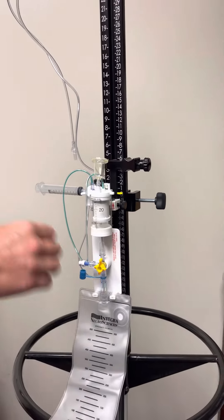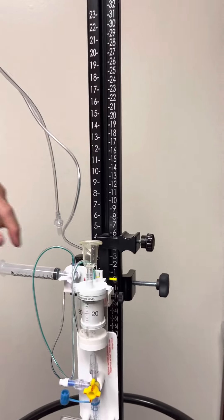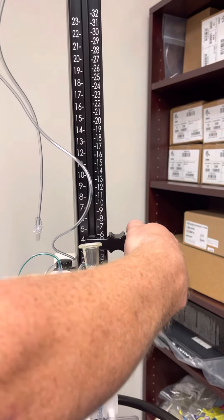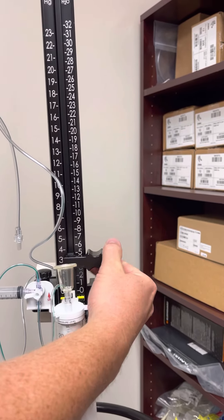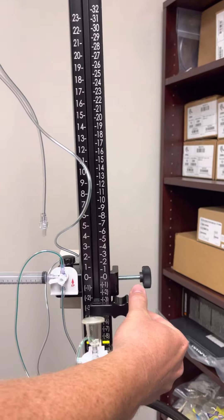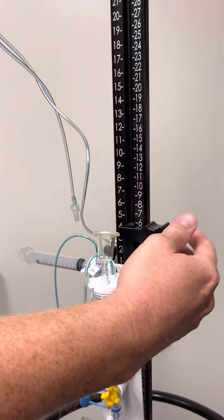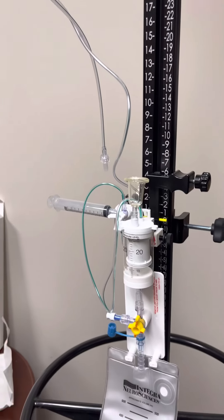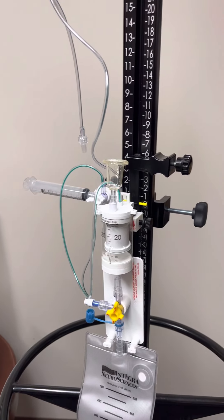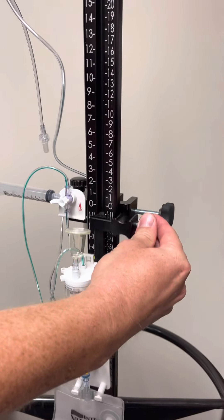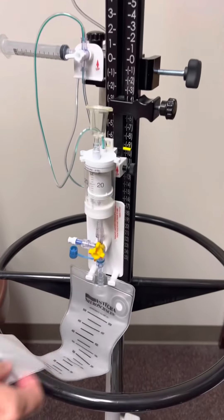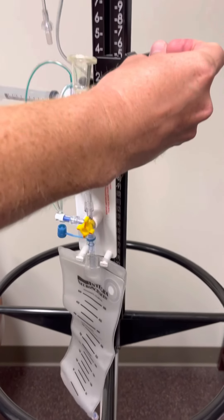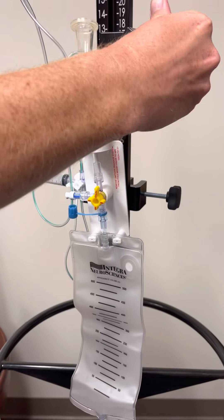The other thing about a lumbar drain, there's not necessarily a level of the drain ordered like our EVD or ICP monitor. This is more kind of patient preference or specific. Depending on if the drain is not draining enough output, then you would lower the device to get the desired or ordered output. Or if it's draining too fast and causing the patient to have a spinal headache, you could raise the device.